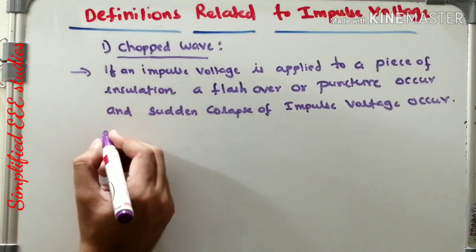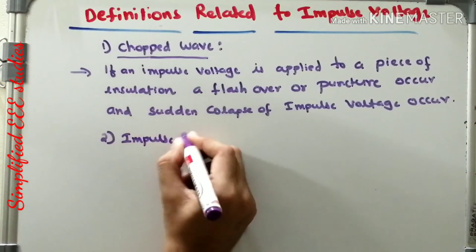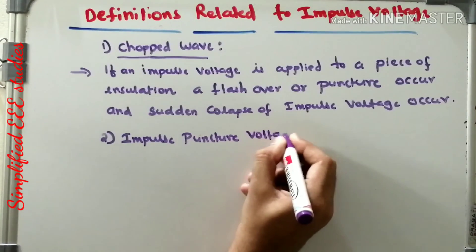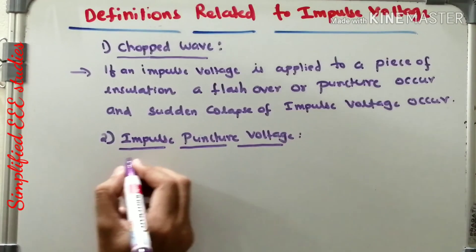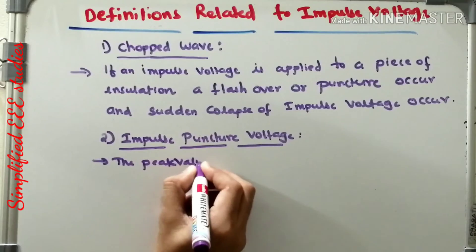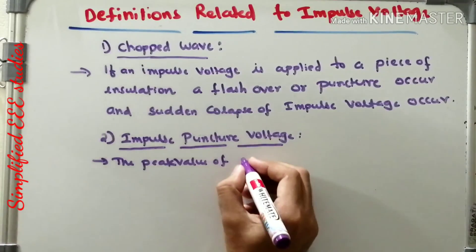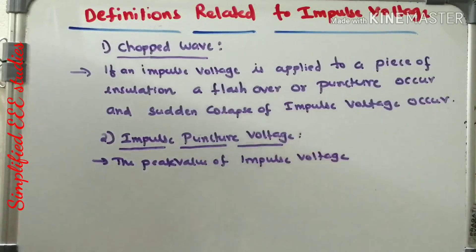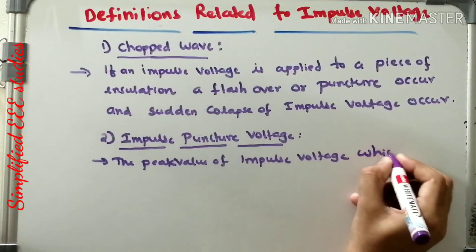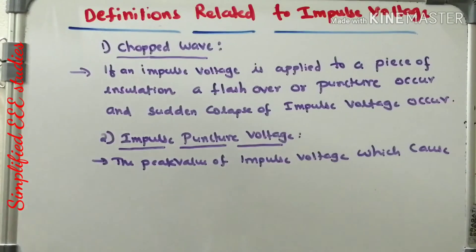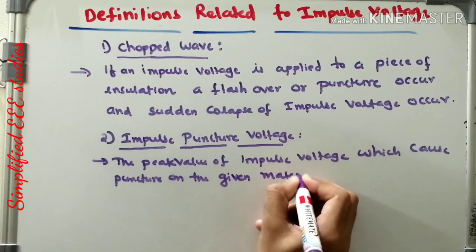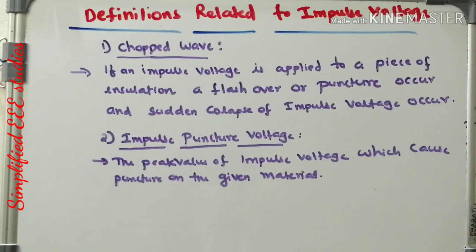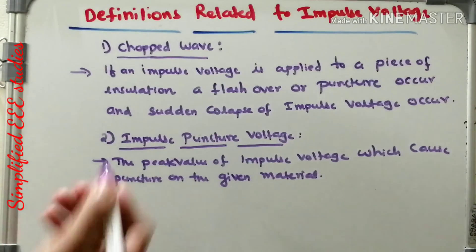Moving on to the next definition: impulse puncture voltage. The peak value of the impulse voltage or impulse wave which causes puncture on the given material is generally known as impulse puncture voltage.